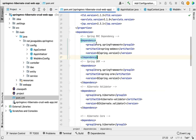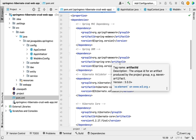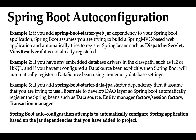Spring Boot will automatically configure all the Spring beans whenever you add a jar dependency in the pom.xml file. For example, if you add spring-boot-starter-web to your project, Spring Boot assumes you are building a Spring MVC application and automatically registers beans like DispatcherServlet and ViewResolver. Similarly, if you add spring-boot-starter-data-jpa, Spring Boot automatically configures Hibernate-related beans such as DataSource, SessionFactory, and TransactionManager. You just add the starter dependency and Spring Boot takes care of the rest.